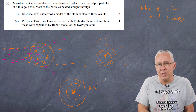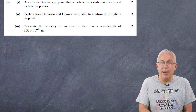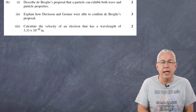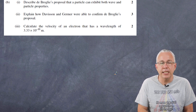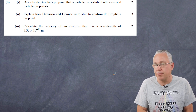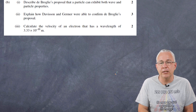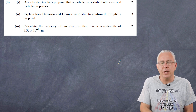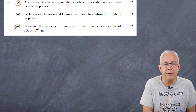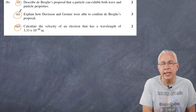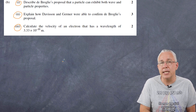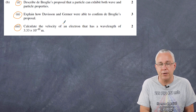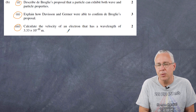It's not a perfect model, and subsequent studies show problems with Bohr's model along the way, but it gives us a good head start. The next question, part B, asks: describe de Broglie's proposal that a particle can exhibit both wave and particle-like properties; explain how Davisson and Germer were able to confirm de Broglie's proposal; and calculate the velocity of an electron that has a wavelength of 3.33 × 10⁻¹⁰ metres.